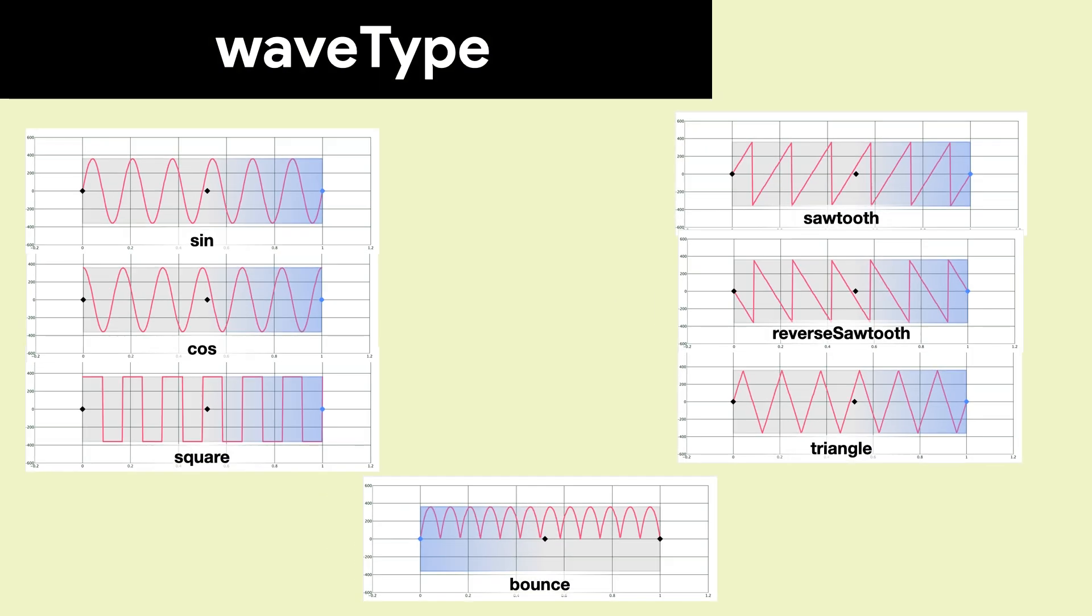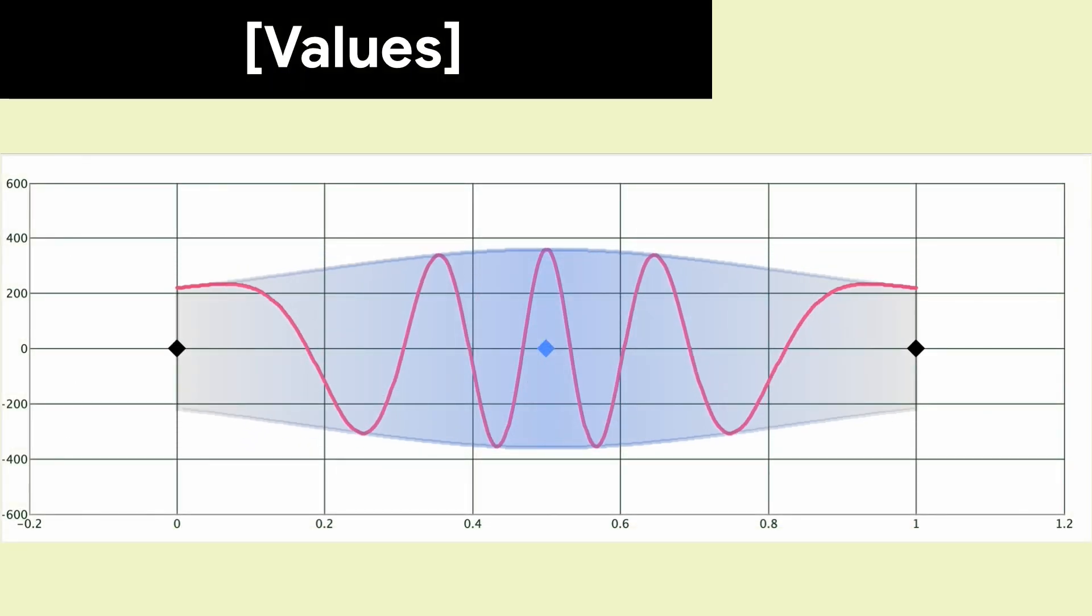For the waveType, we can choose from seven possible values. The wave modulates the amplitude of the waveform.